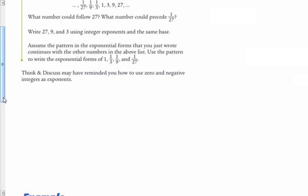So we know how to deal with exponents like this, 2 to the 5th. That's 2 times 2 times 2 times 2, which is 32. And 2 to the 4th is 2 times 2 times 2, which is 16. 2 to the 3rd is 2 times 2 times 2, which is 8.